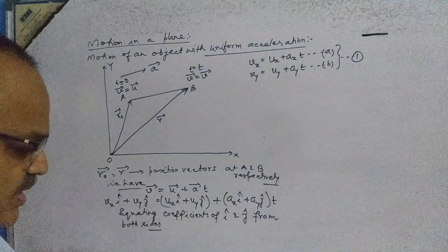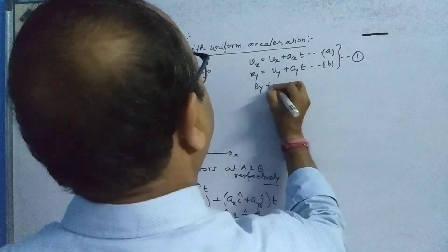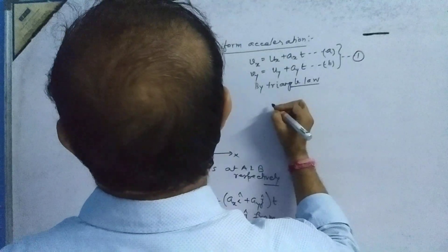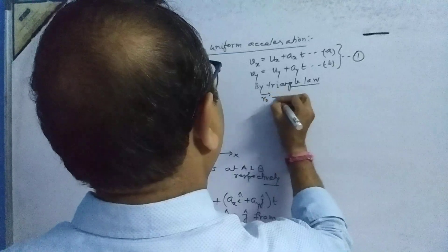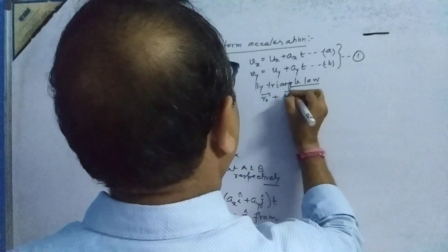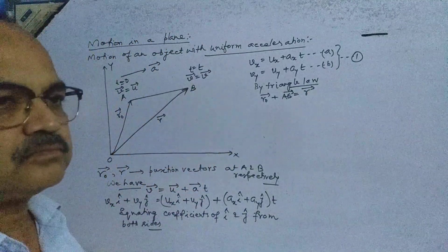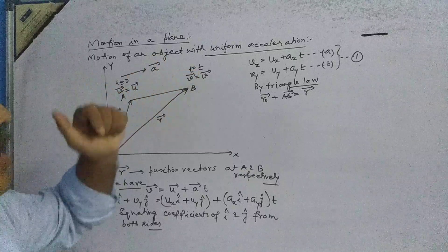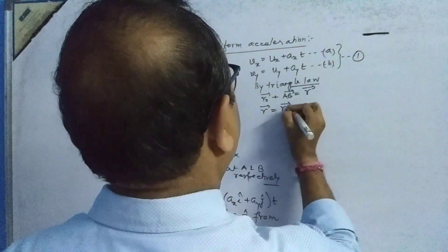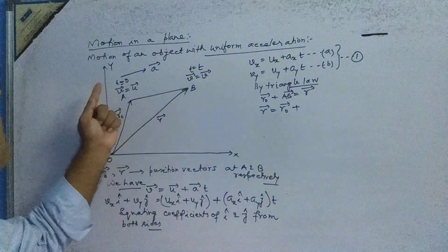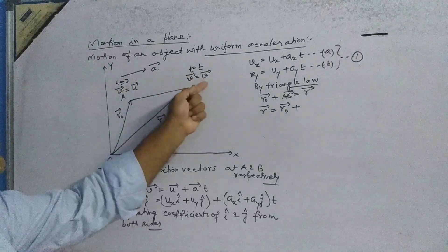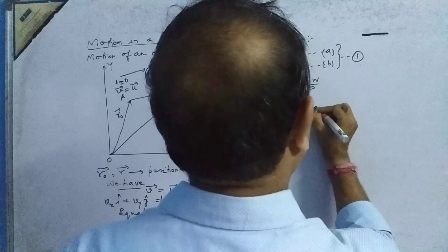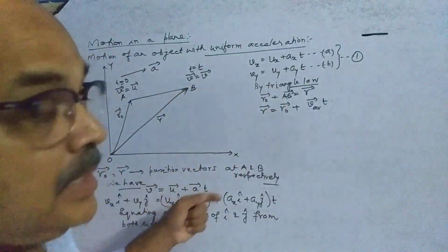Now by the triangle law of vector addition, we can write: R₀ vector plus AB vector equals R vector. So R vector equals R₀ vector plus AB vector. The AB vector can be written as the average velocity vector V_average, which equals (u vector + v vector) divided by 2, multiplied by t.